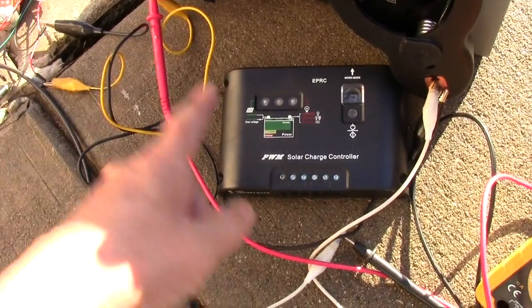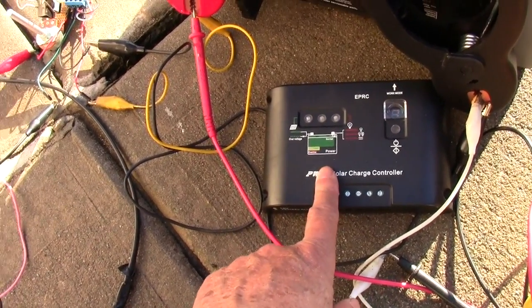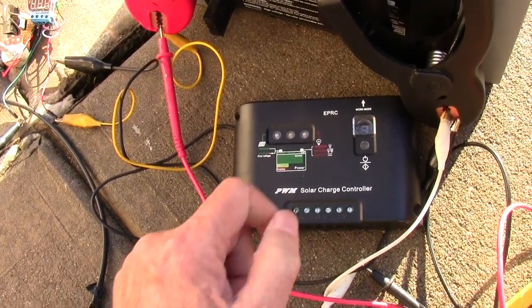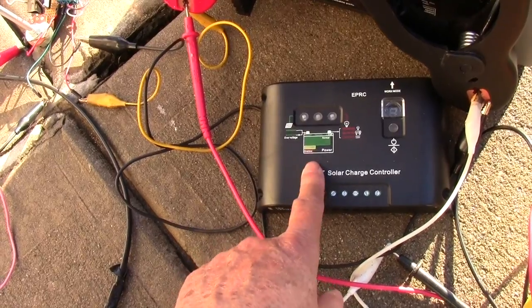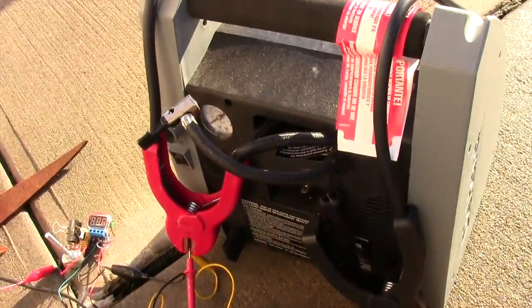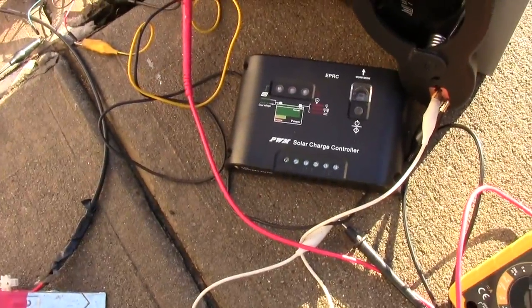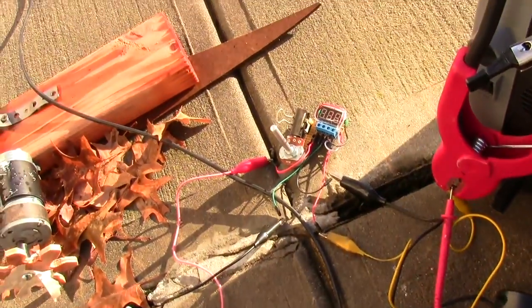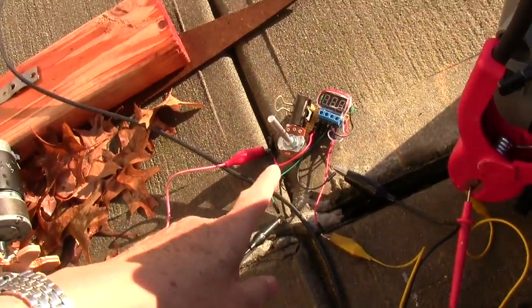For a sealed battery like this, the float charge should not be higher than 13.2 volts. So that's why I think this regulator is actually better.